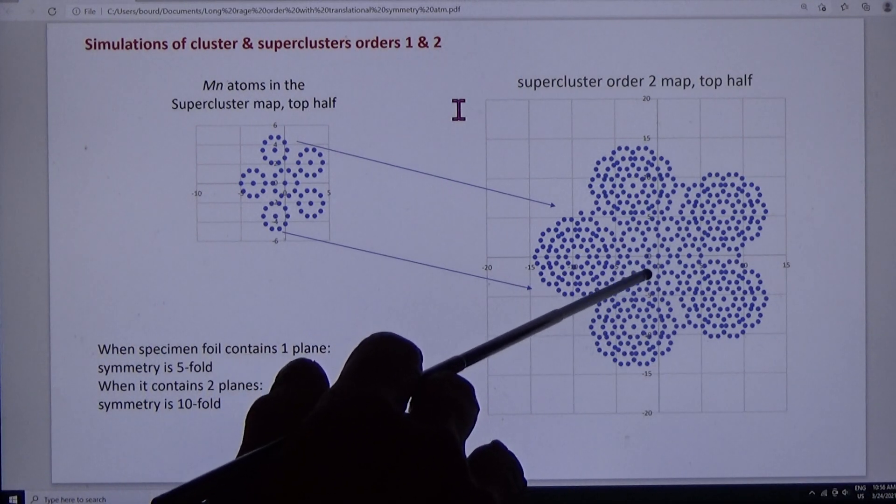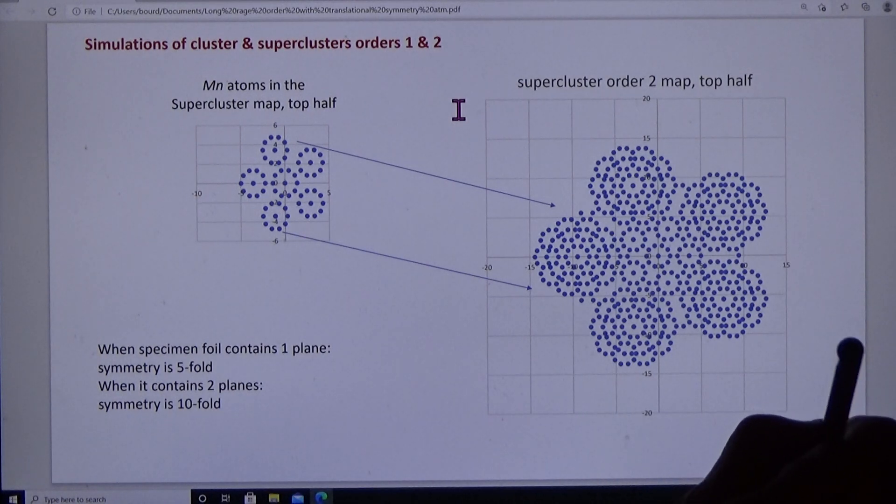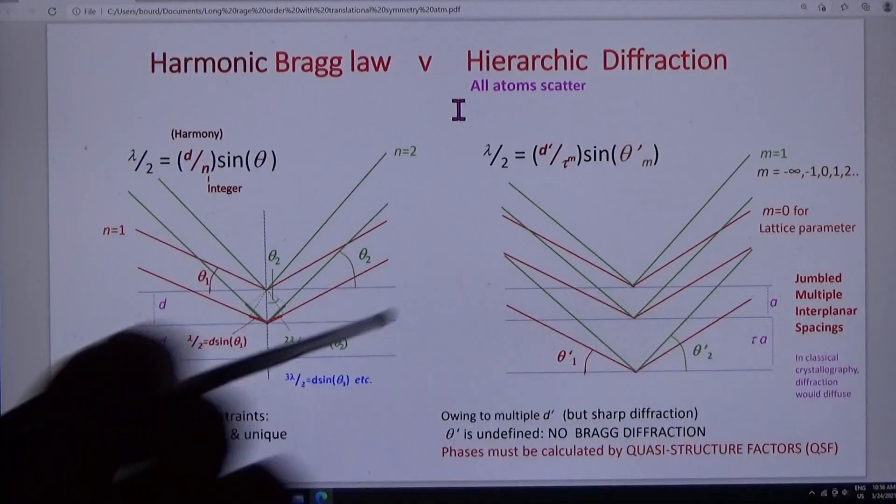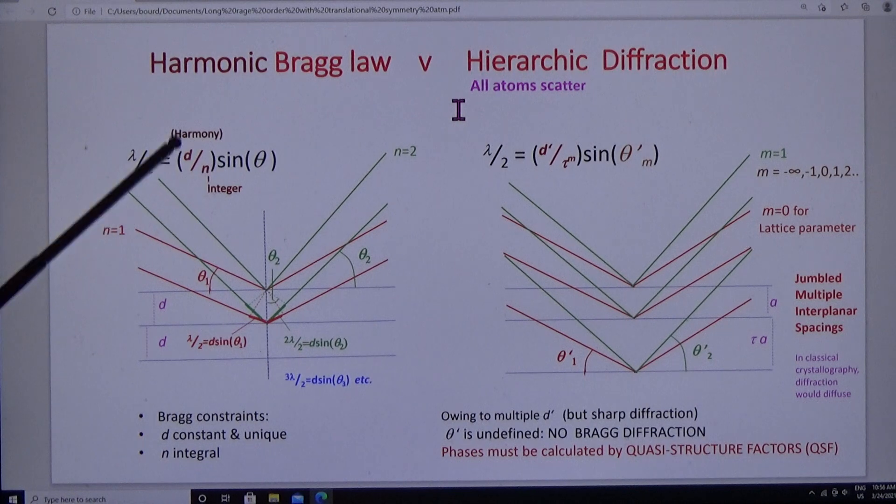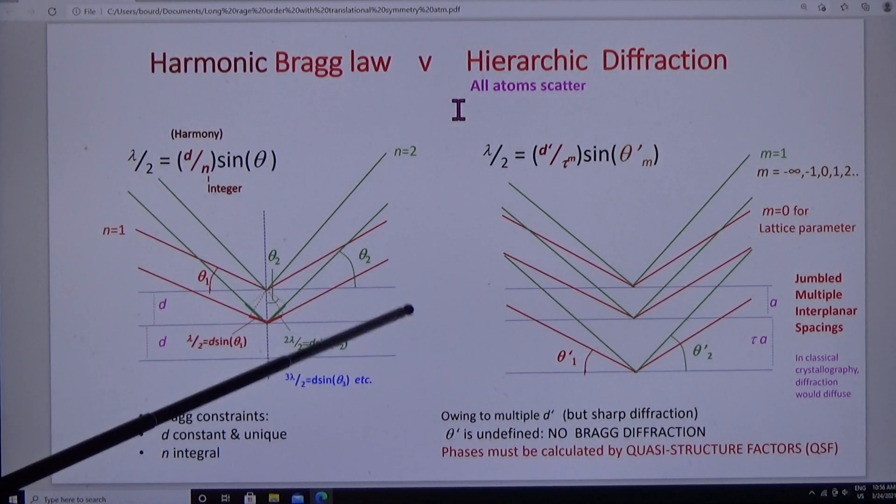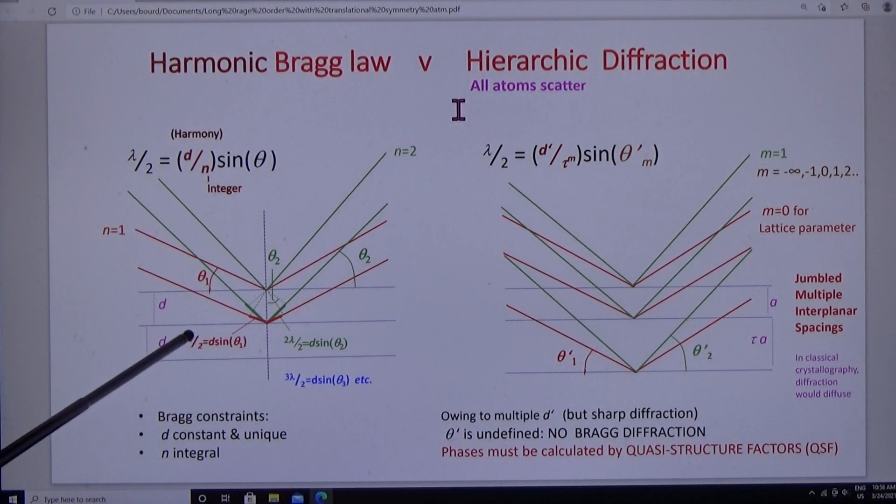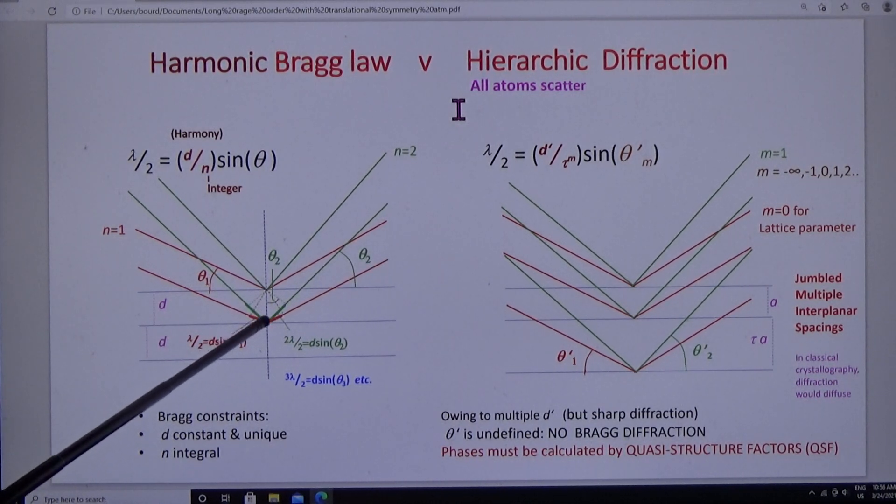On the right is a supercluster order two, mapping manganese. Let's think about the diffraction. In crystals, the atoms exist on planes. The planes are spaced by a periodic interplanar spacing D, and so look at the red rays. The difference in path length is equal to lambda, the wavelength of the radiation.